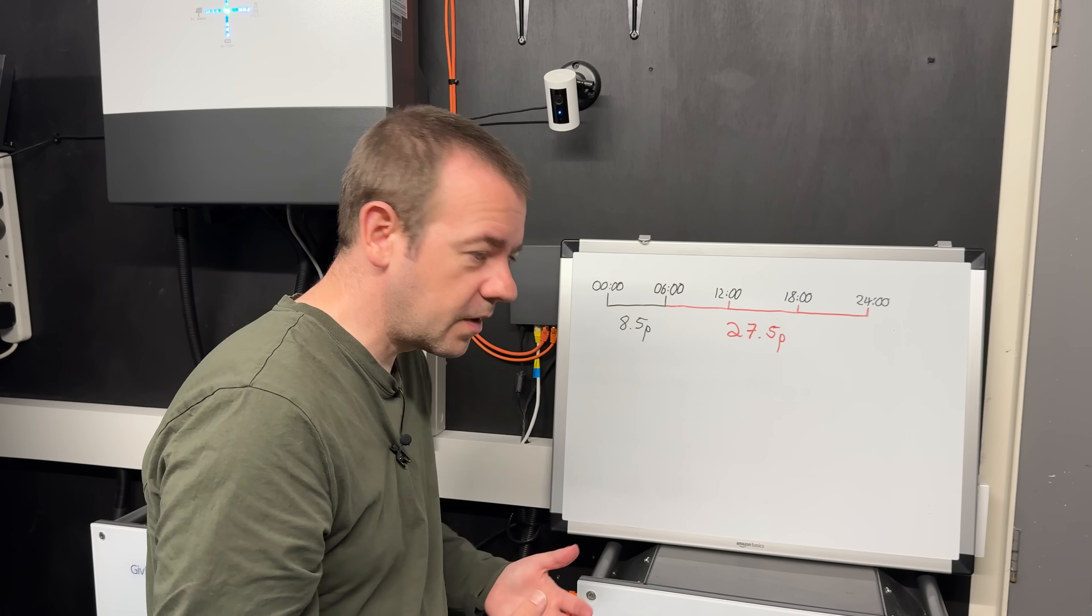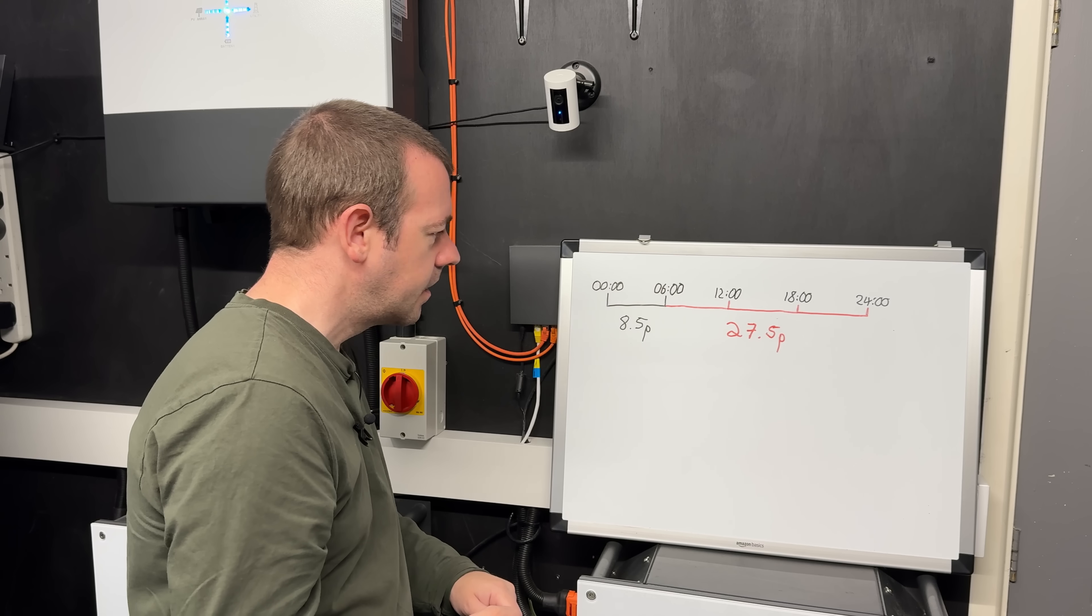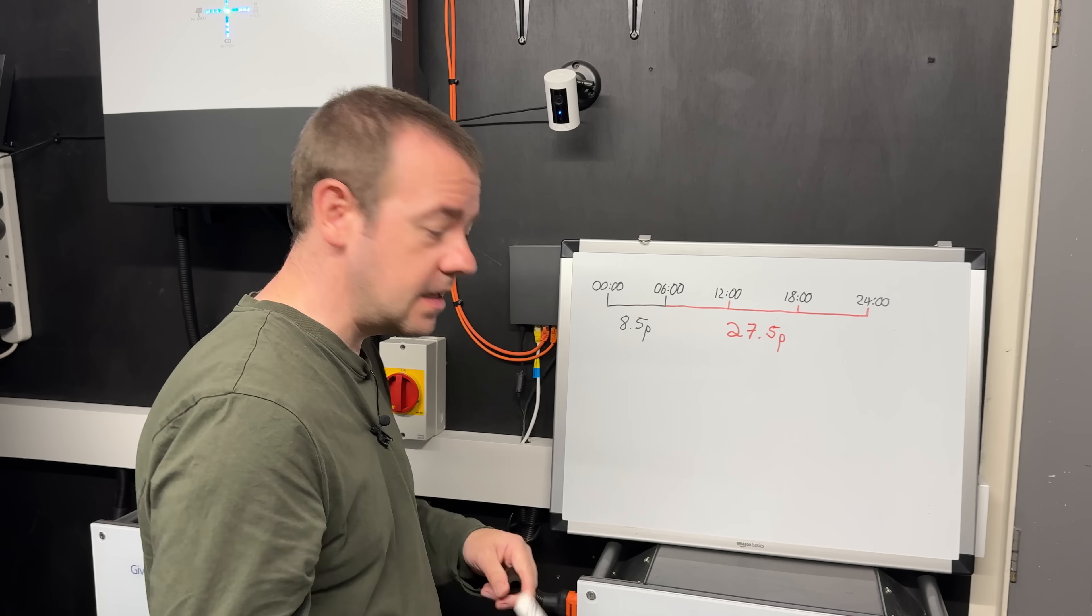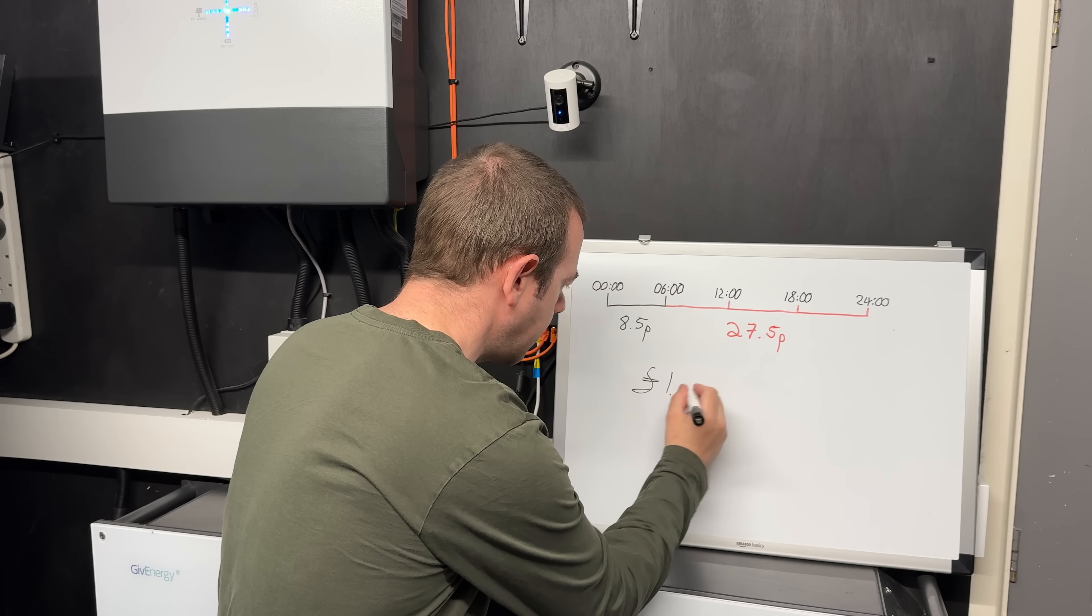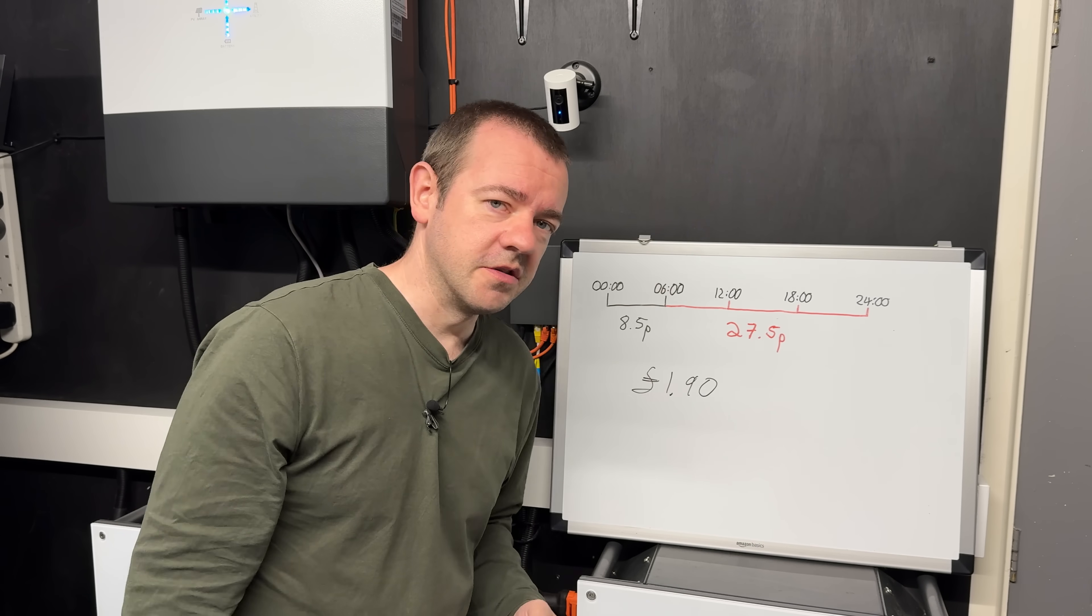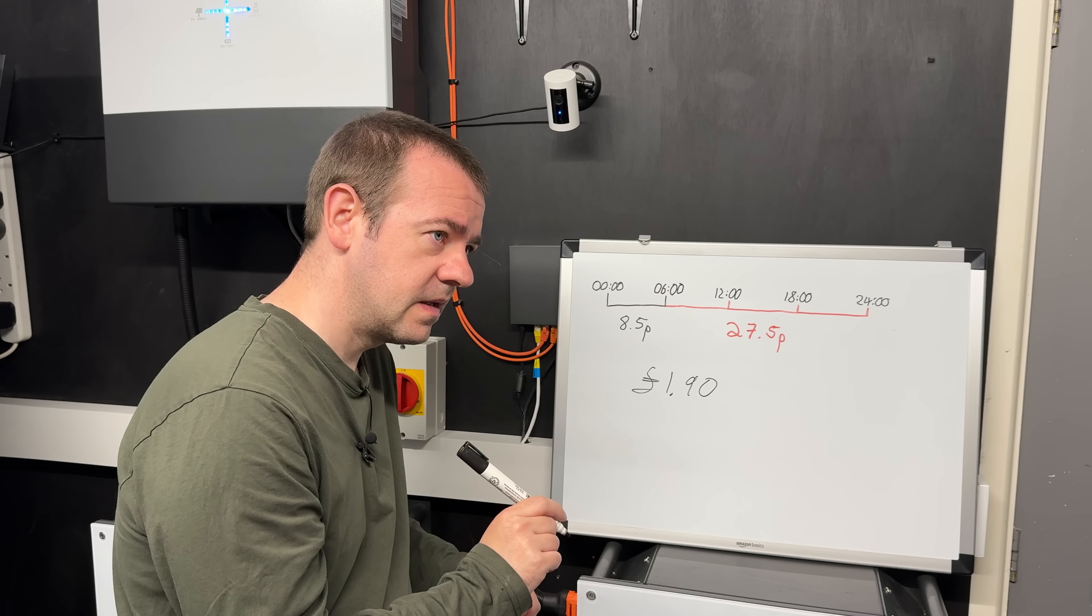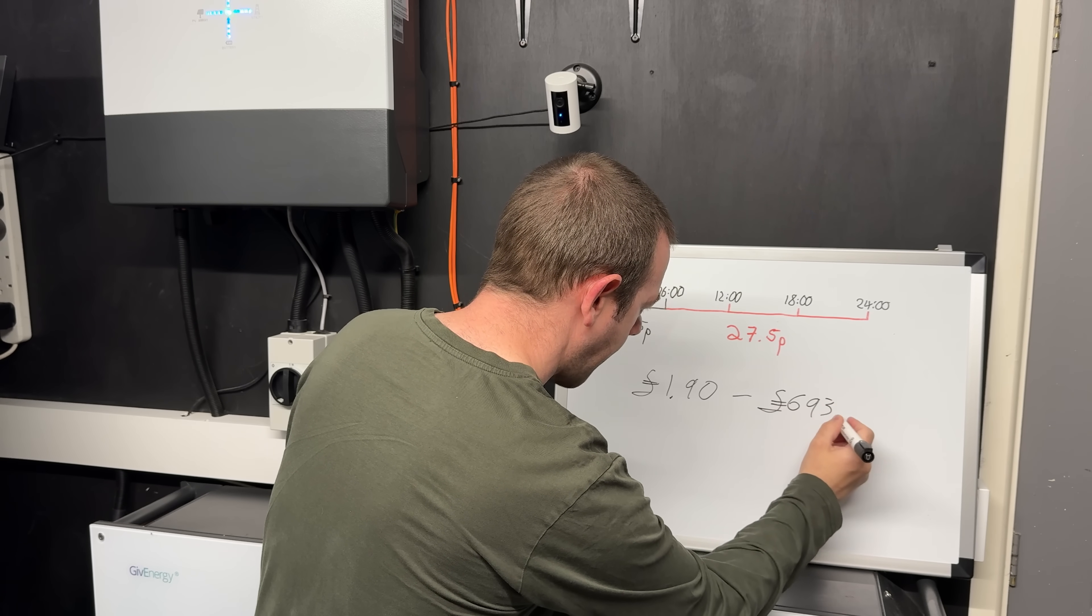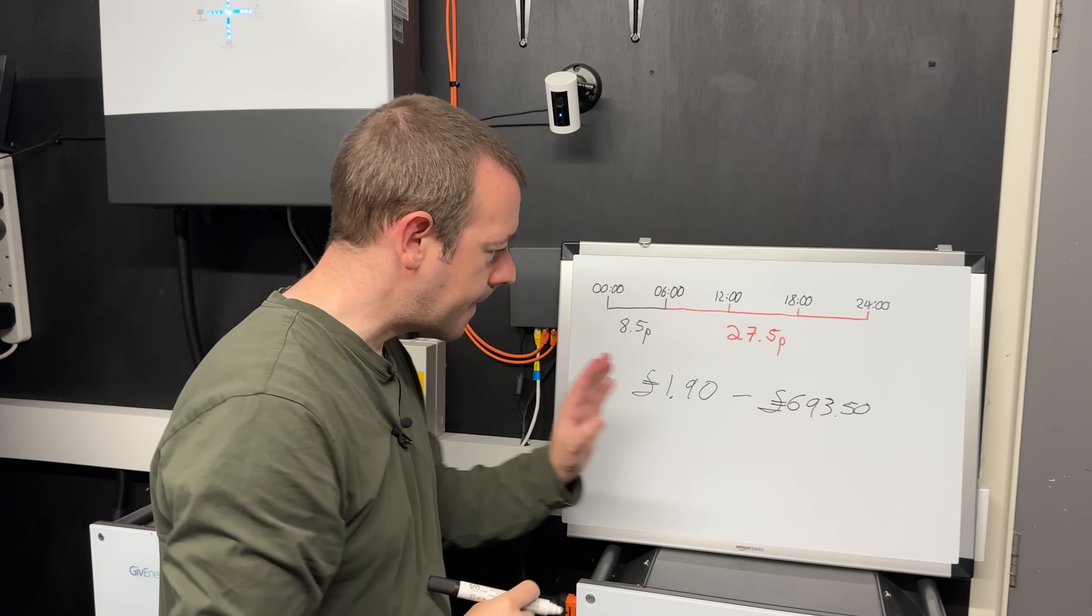Let's assume that you use, we'll make it nice and simple, 10 kilowatt hours worth of electricity every day. So instead of paying 27.5 pence, I would be paying 8.5 pence. So 19 pence per kilowatt hour saving times 10 gives me a saving of £1.90 per day. Which doesn't sound like a lot, does it? £1.90 per day. But per year, that is £693.50 per year, just by having a storage battery that can take advantage of that time of day tariff.